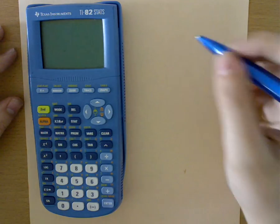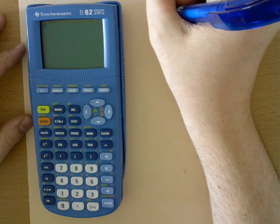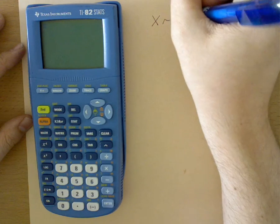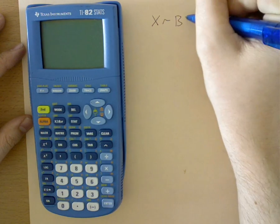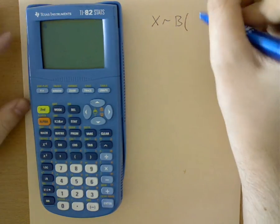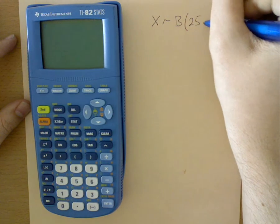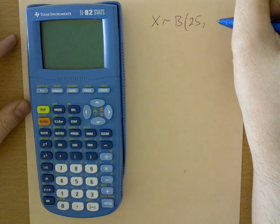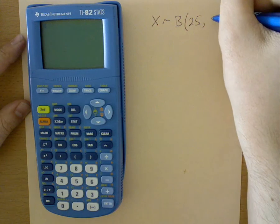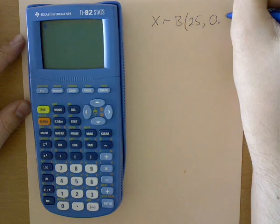Let's say we have X is binomially distributed with a number of trials, let's say 25 trials, and a probability of success of 0.8.